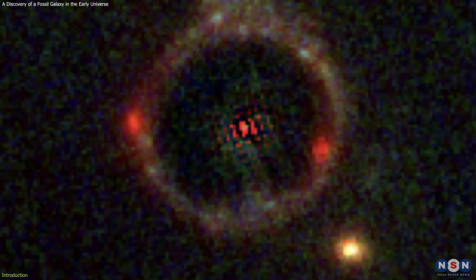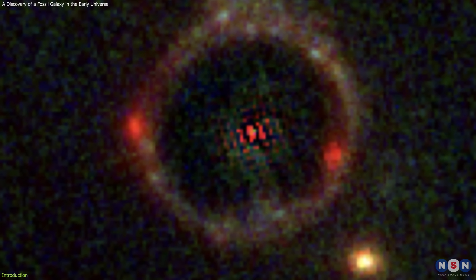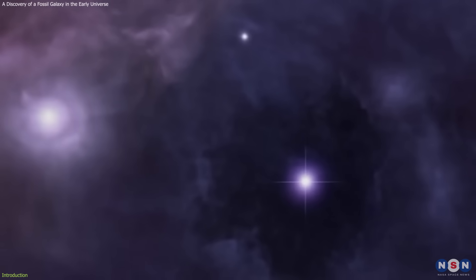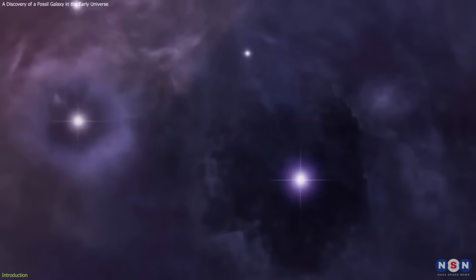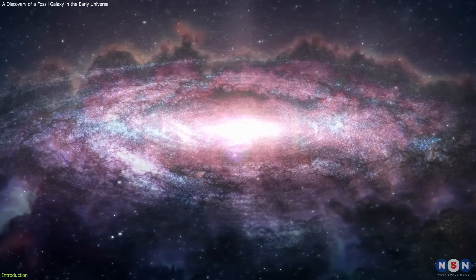It raises many questions, such as: how did this galaxy form and quench its star formation so quickly and efficiently? What are the physical mechanisms that regulate star formation and the feedback processes in these galaxies? And how common and representative are these galaxies in the early universe?